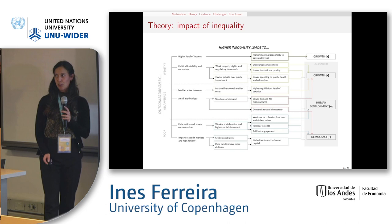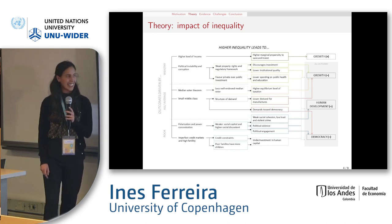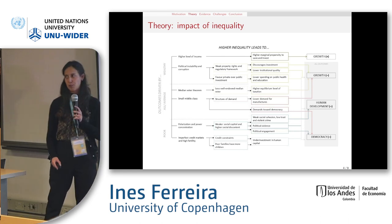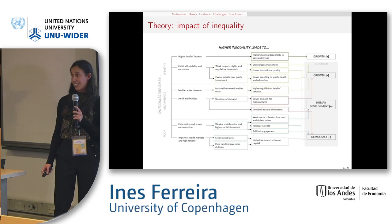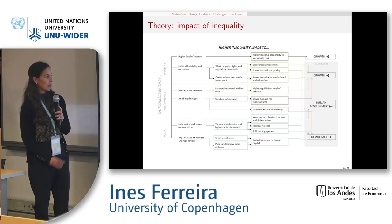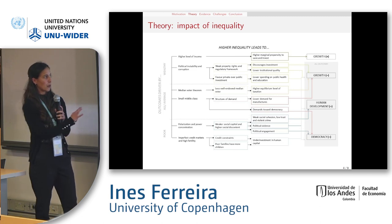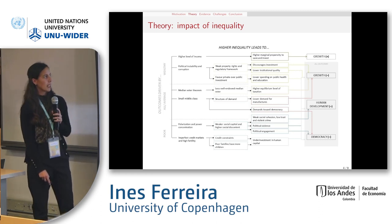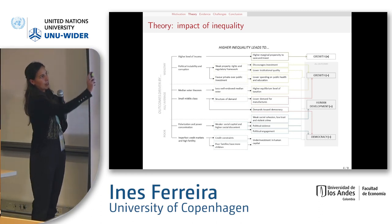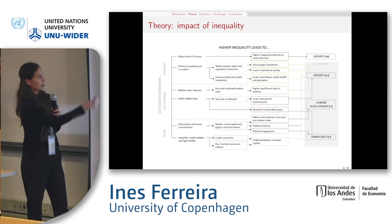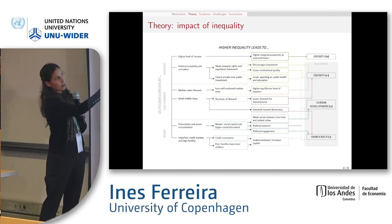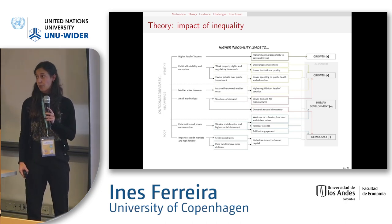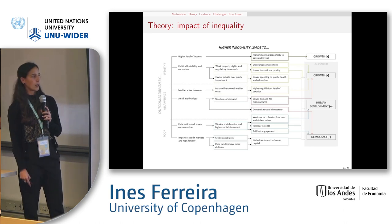Starting with the theory — apologies if you can't see very well at the back — we tried to summarize everything into a simplified framework. It is simplified and we lose some details, but we try to highlight both the differences between the channels and how they're interlinked. From left to right of the framework we have transmission channels, intermediate effects, and on the right the general positive or negative effect on the three main outcomes of interest.